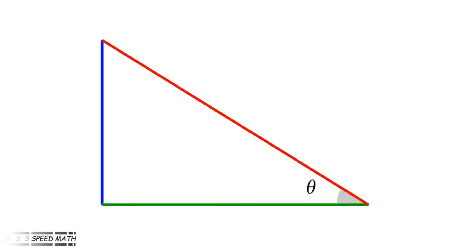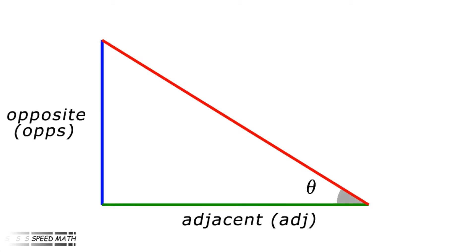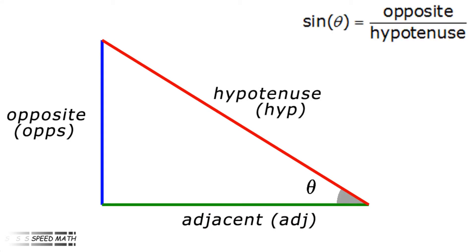So what is the sine of an angle? If theta is an angle in a right angle triangle we can describe it from the ratio of two sides. The sides are named adjacent, opposite, and hypotenuse. The sine of an angle is simply the ratio of the opposite side to the hypotenuse. Sine theta equals opposite divided by hypotenuse, or in abbreviated form, sine theta equals opp over hyp.